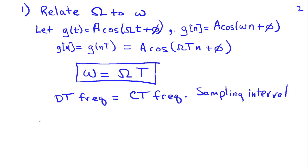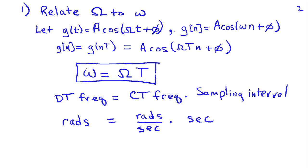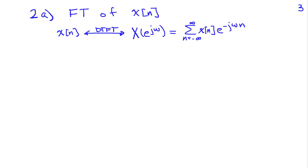The units check out as well. Discrete time frequency is in units of radians, obtained by taking continuous time frequency in radians per second and multiplying by the sampling interval in seconds. So again, discrete time frequency, lowercase omega, equals continuous time frequency, uppercase Omega, times the sampling interval T.